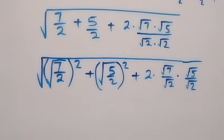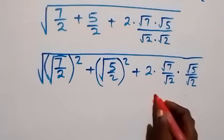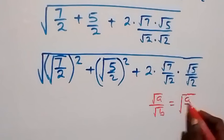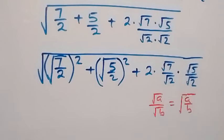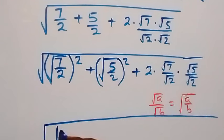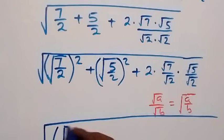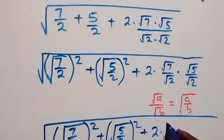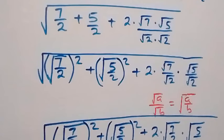Now we have root a over root b, which can be written together as root of a over b. Then we can write here, and this will become square root of: root 7 over 2 all squared, then plus also square root of 5 over 2 all squared, then plus 2 times square root of 7 over 2, times square root of 5 over 2.